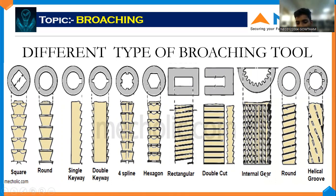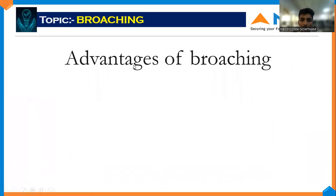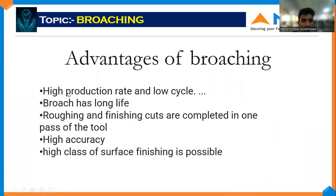Helical and internal gear broaching tools are very important because we cannot make these in a milling machine — that is very difficult to make. Advantages of broaching: high production rate and low cycle time, broaching tools have a long life, roughing and finishing cuts are completed in one pass of the tool, high accuracy, and high quality of surface finishing is possible.